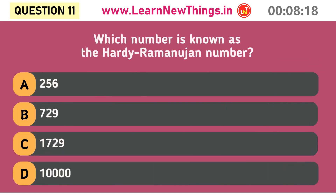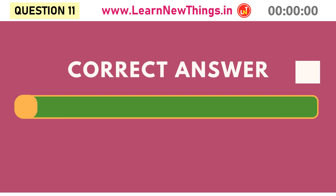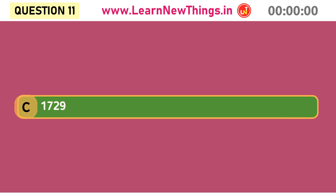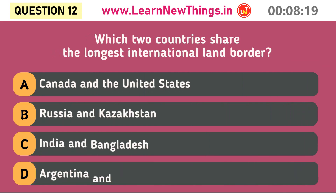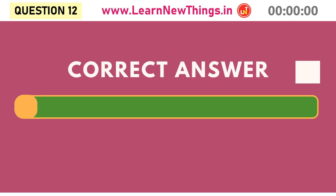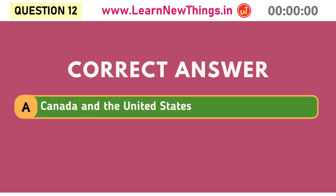Which number is known as the Hardy-Ramanujan number? 1729. Which two countries share the longest international land border? Canada and the United States.